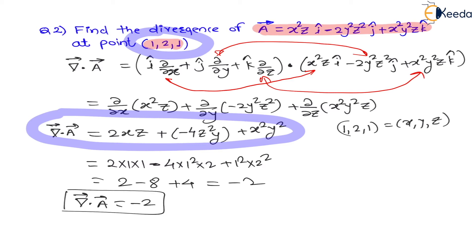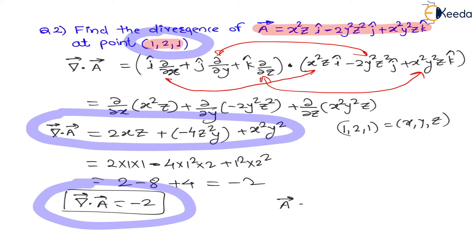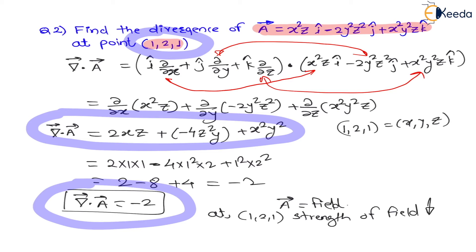In divergence we have learned: if divergence is positive then the strength of the field is increasing, and if divergence is negative the strength of field is decreasing. Here vector a is a field — any field, three-dimensional. At this particular point (1, 2, 1) the strength of the field is decreasing because the divergence is negative. If the answer comes positive, strength is increasing; if zero, strength is constant.